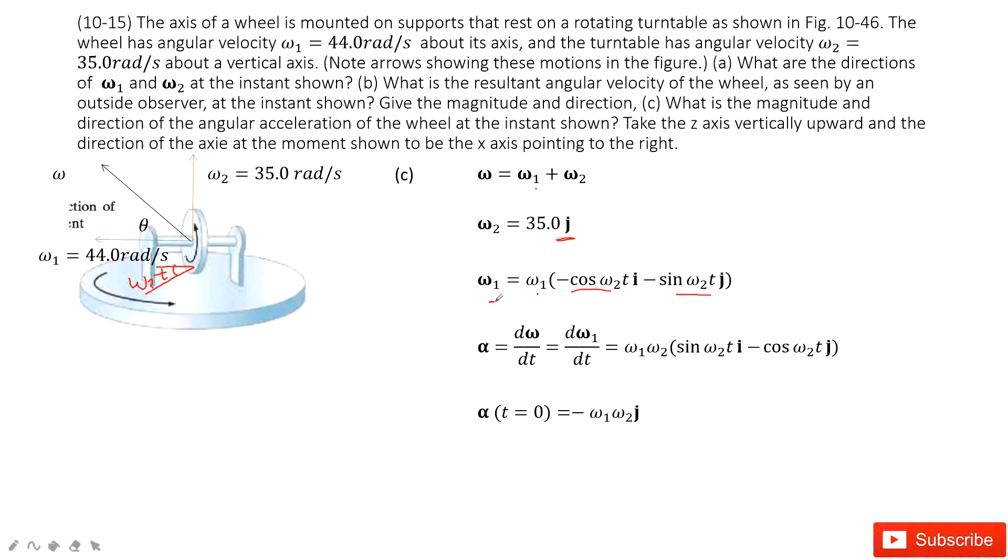You can see only omega 1 is related to time t. To find the angular acceleration, we use the derivative of omega with respect to t. Since omega 2 is constant, it's zero. So we just consider d omega 1 / dt. Doing this derivation, we get the equation shown here. Then we substitute t equals zero to get the final answer.